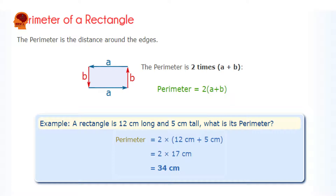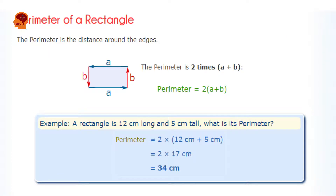The formula for the perimeter of a rectangle is: Perimeter = 2 × length + 2 × breadth, or simply Perimeter = 2(length + breadth). For example, a rectangle is 12 centimeters long and 5 centimeters tall. What is its perimeter? Perimeter = 2 × (12 cm + 5 cm) = 2 × 17 cm = 34 centimeters.